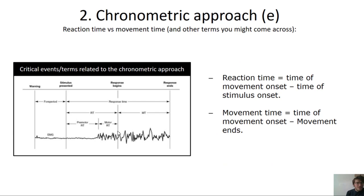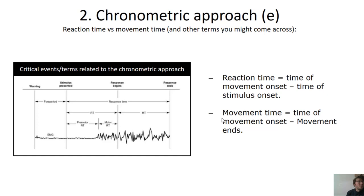There are a number of key terms in the chronometric and information processing approaches. Reaction time is the time between stimulus onset and movement onset. Movement time is the time between movement onset and the end of a movement. One way to make a movement more complicated — to load the response programming stage — is to require that the movement take longer to complete.